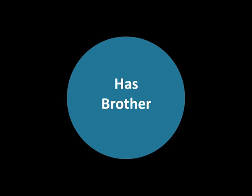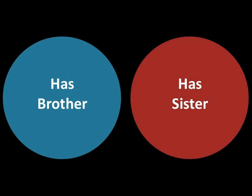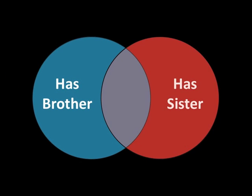The typical lesson starts with a circle and probably you get two children to come up — maybe a brother and sister, Kiefer and Julia — and they have to place their names either inside the circle or outside. Julia has a brother so she places it within, and Kiefer does not. Then we go to two questions. Fian has both a brother and a sister, and Rosie comes from a single child family so she has neither.